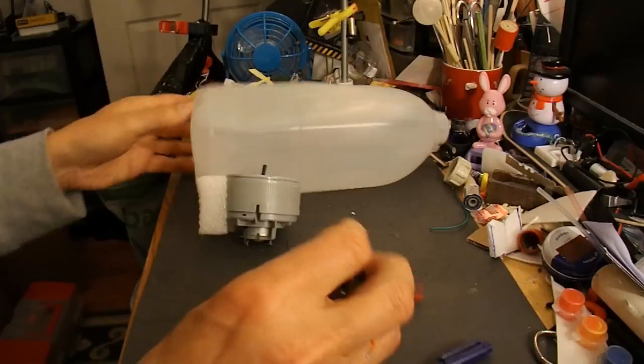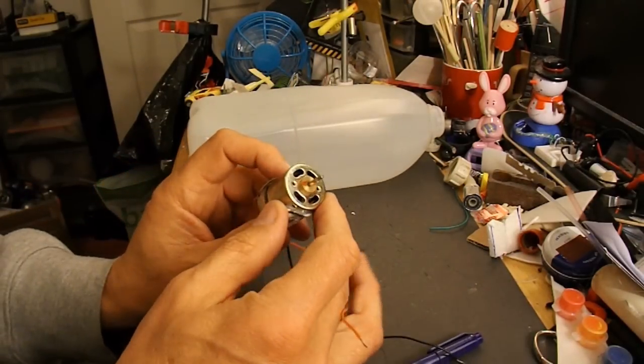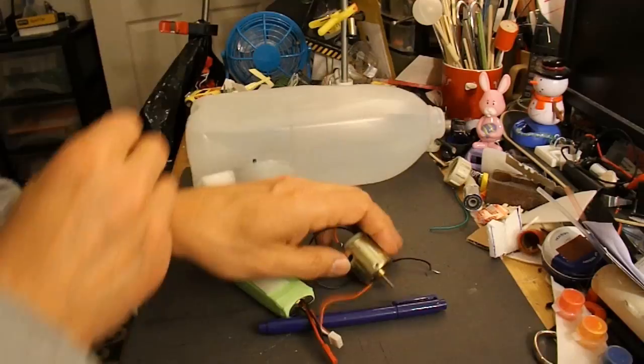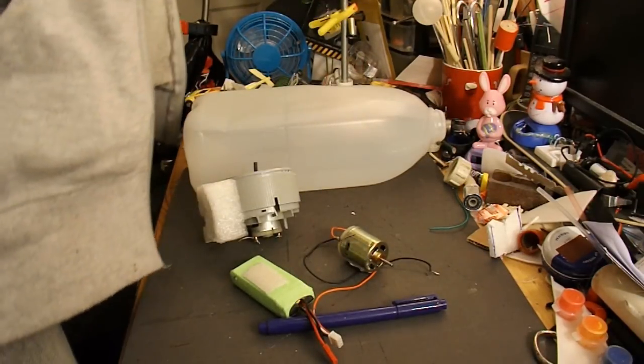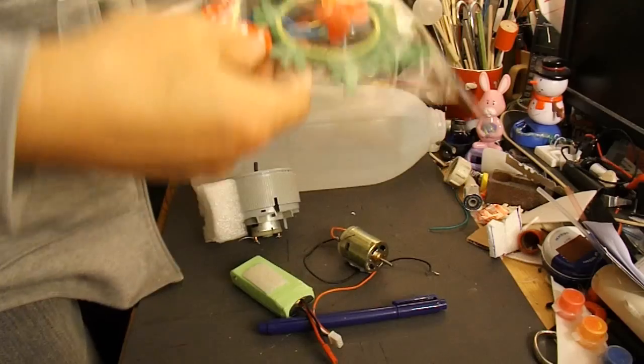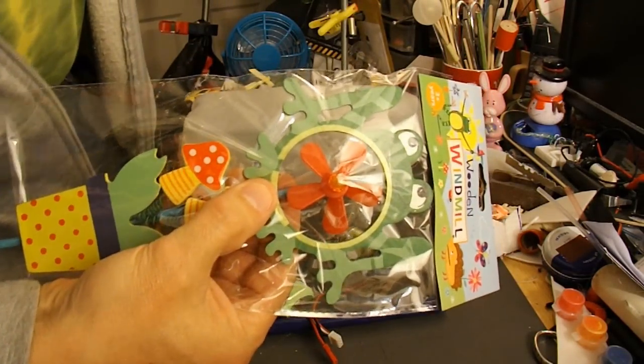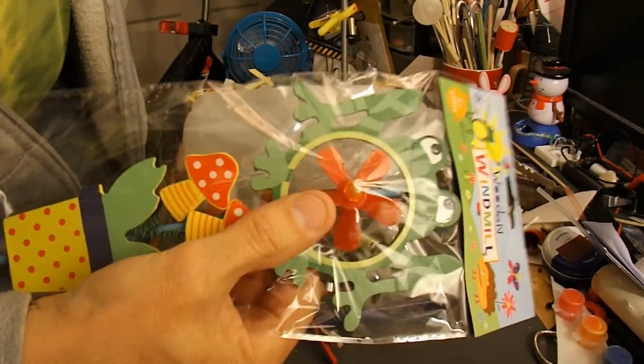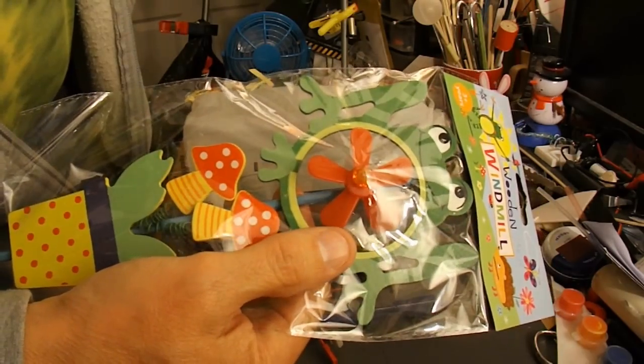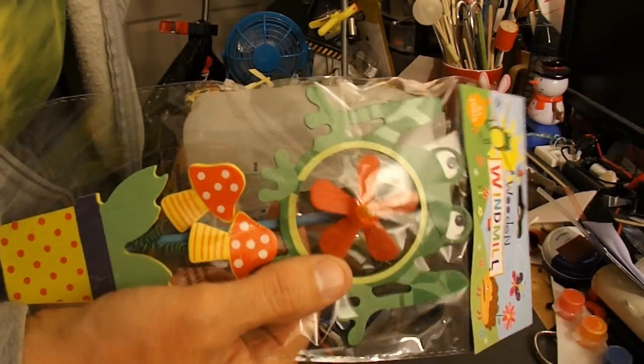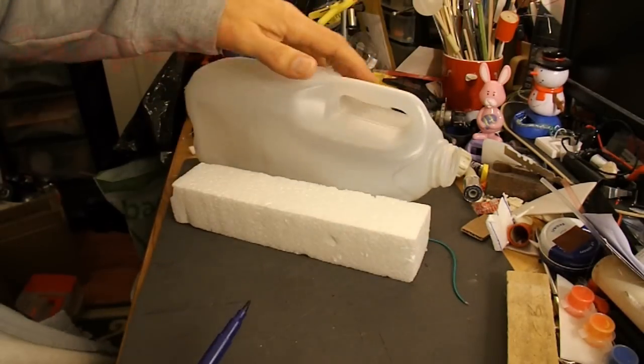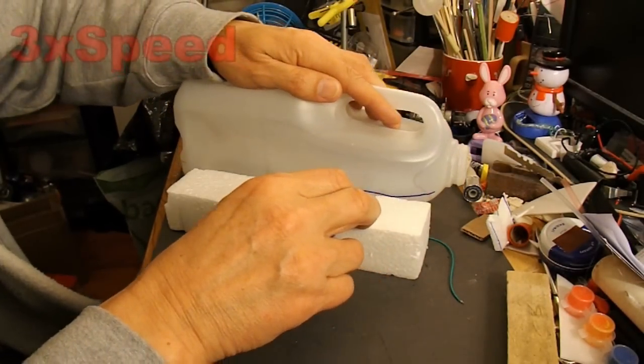For the propeller, I'll probably still use one of my garden ornament propellers. Something like that, I should think. It's not going to be the most efficient propeller, but it's a convenient one that I can get hold of easily. First thing I'll do is cut up this milk carton.